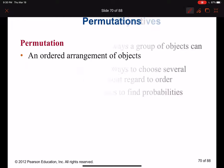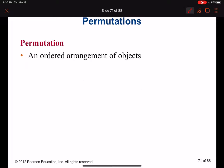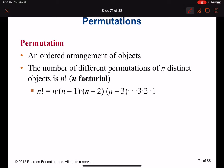Let's start with permutation. Permutation is an ordered arrangement of objects. The number of different permutations of n distinct objects is n factorial.